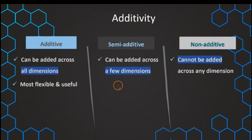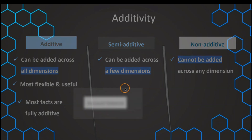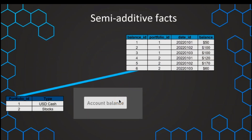Now let's look at the semi-additive fact. The most common example is account balances. We have one row where on day one the account balance is 50 dollars. We add 50 dollars, so on the next day the balance is 100 dollars. On the following day there is no change — no money in or out — so the value is still 100 dollars.